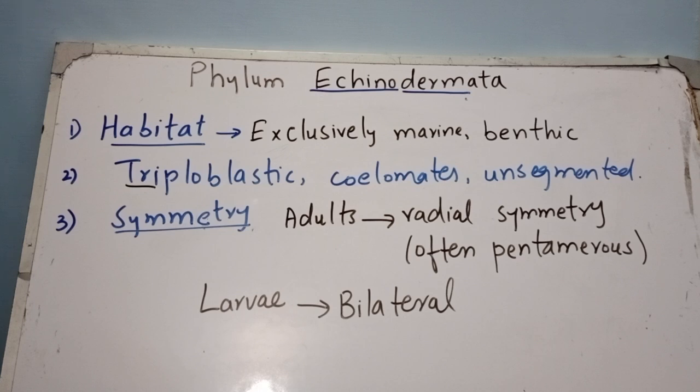On the other hand, the larvae of echinoderms show bilateral symmetry, meaning the larva can be cut into two equal halves by only one plane. The larvae are ciliated, free swimming, and show bilateral symmetry.